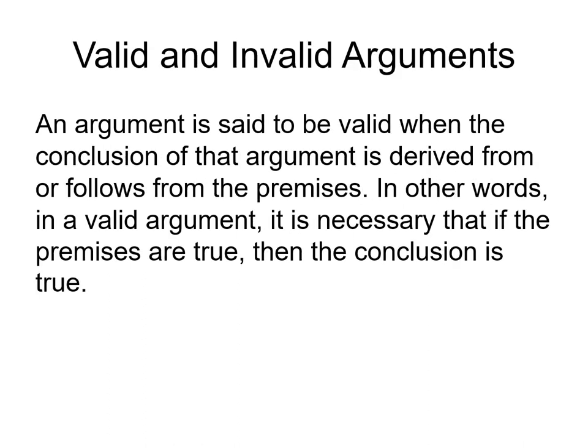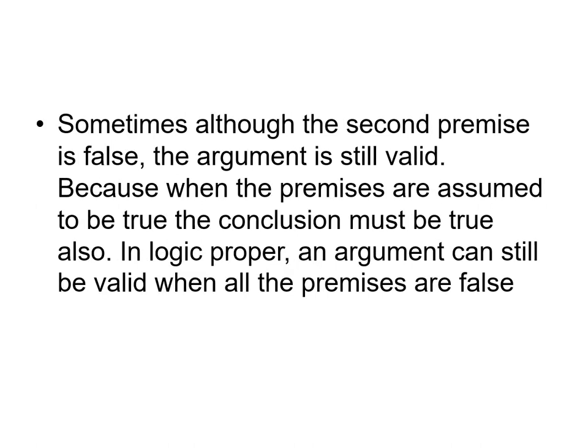An argument is said to be valid when the conclusion of that argument is derived from or follows from the premises. In other words, in a valid argument, it is necessary that if the premises are true, then the conclusion is true. Sometimes, although the second premise is false, the argument is still valid, because when the premises are assumed to be true, the conclusion must be true also.